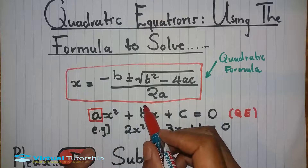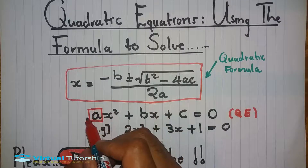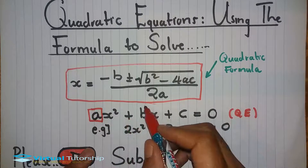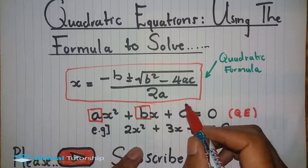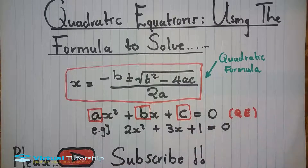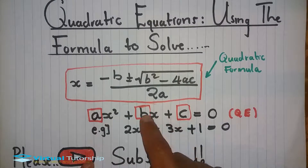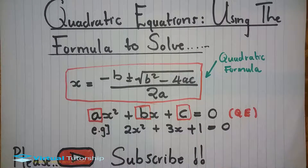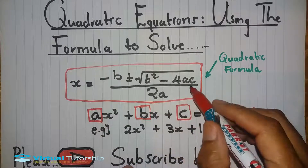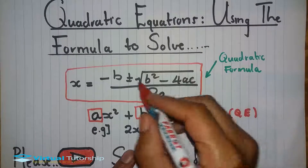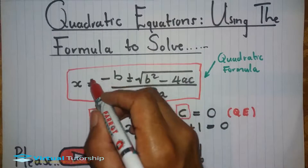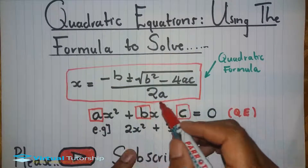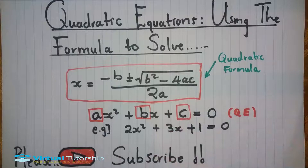There is coefficient a, this is coefficient b, and coefficient c. These are the coefficients used in the quadratic formula.